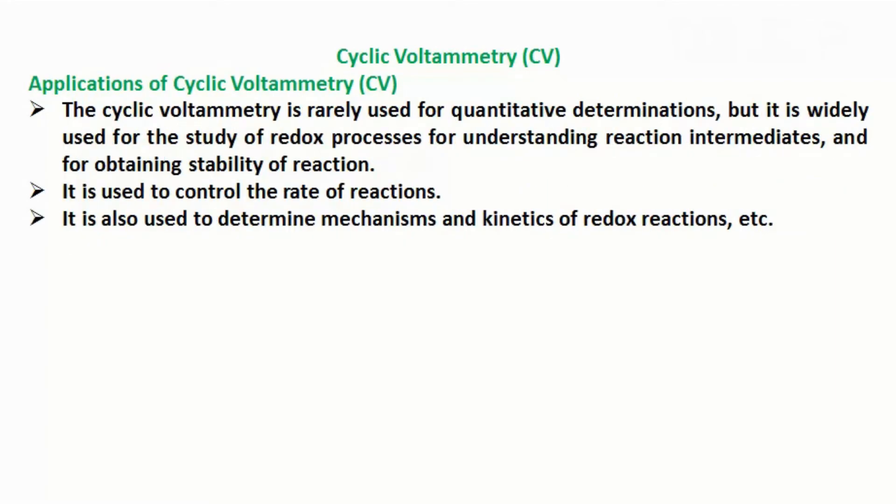Applications of cyclic voltammetry CV. The cyclic voltammetry is rarely used for quantitative determinations, but it is widely used for the study of redox processes, for understanding reaction intermediates, and for obtaining stability of reaction. It is used to control the rate of reactions and to determine mechanisms and kinetics of redox reactions.